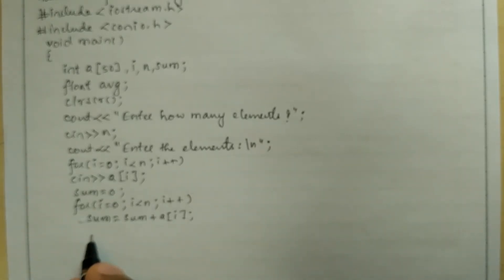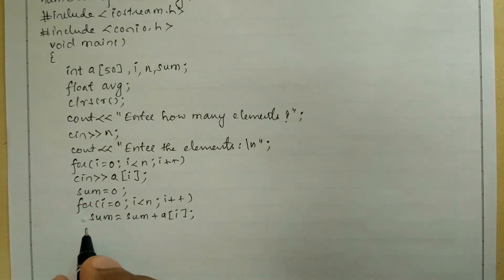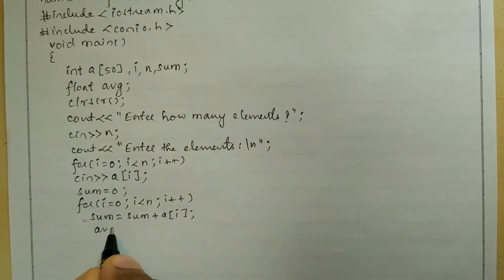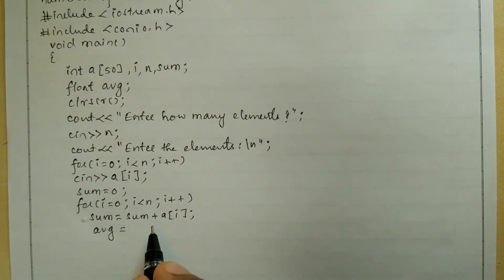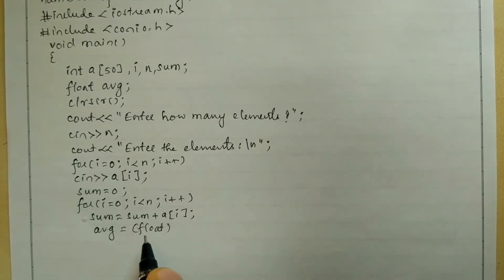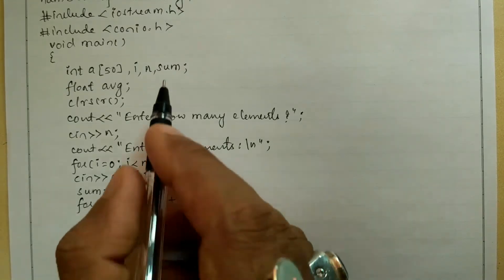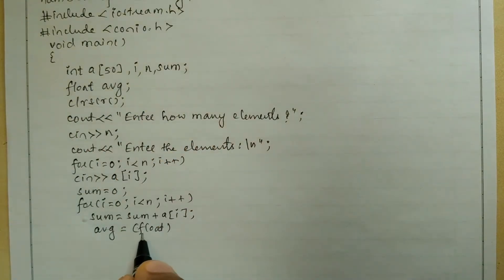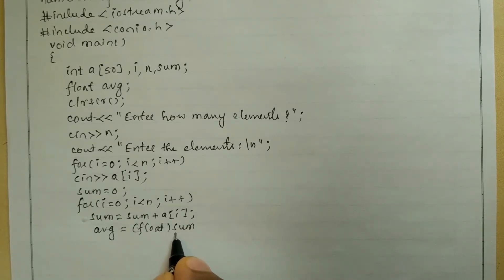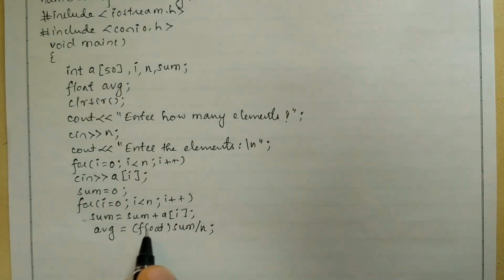After performing sum I need to calculate average. Here I am going to calculate avg — and I am going to write float inside the bracket. Why? Because I want to convert the integer sum to floating type — that is called explicit type conversion. So avg is equal to float of sum divided by n, and this calculated value will be stored in the variable avg.